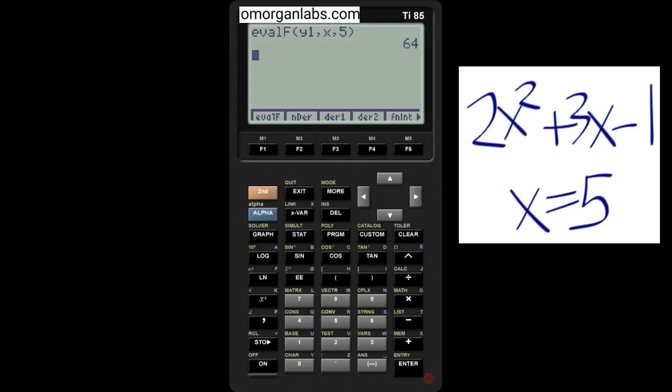Second alpha y1, comma, with respect to x at evaluated at 5. Enter. And there you go. The answer is 64. Hope you learned something on morganLabs.com.